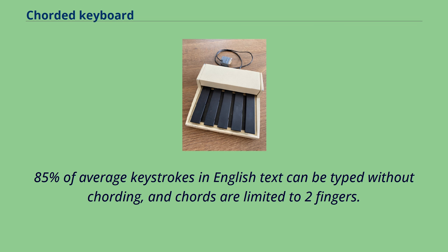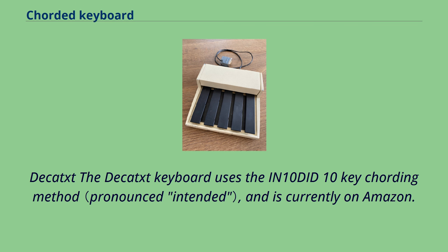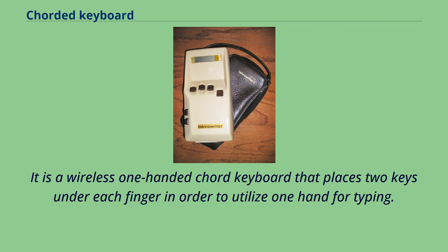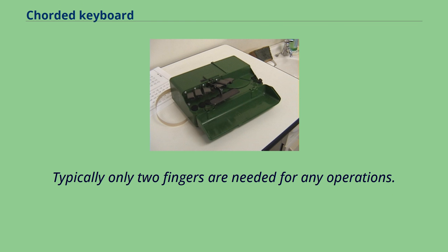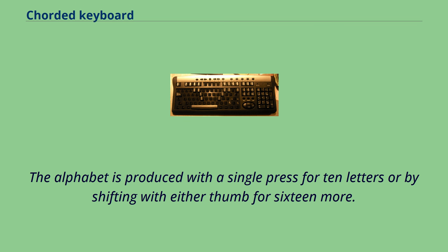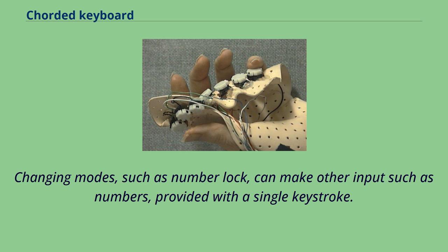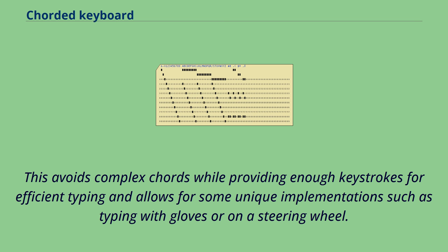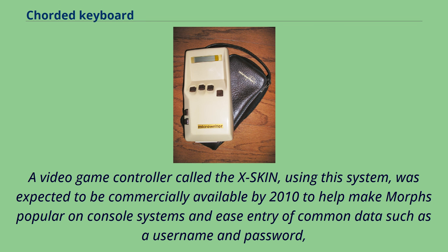The DECATS keyboard uses the IN10-10 key cording method and is currently available on Amazon. It is a wireless one-handed cord keyboard that places two keys under each finger to utilize one hand for typing; typically only two fingers are needed for any operation. Each key is essentially a shift key, so with 10 keys there are 10 single keystrokes and dozens of two- and three-key combinations. The alphabet is produced with a single press for 10 letters or by shifting with either thumb for 16 more. Changing modes such as number lock can make additional inputs like numbers available with a single keystroke, avoiding complex chords while enabling unique implementations such as typing with gloves or on a steering wheel.